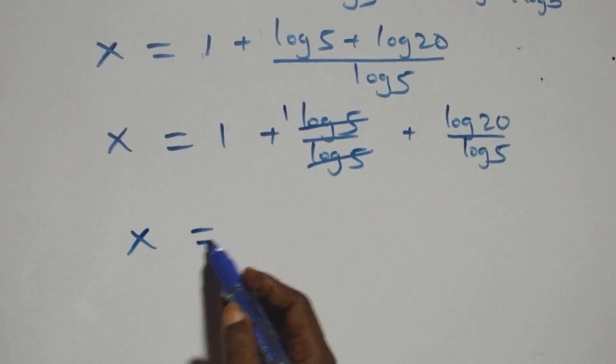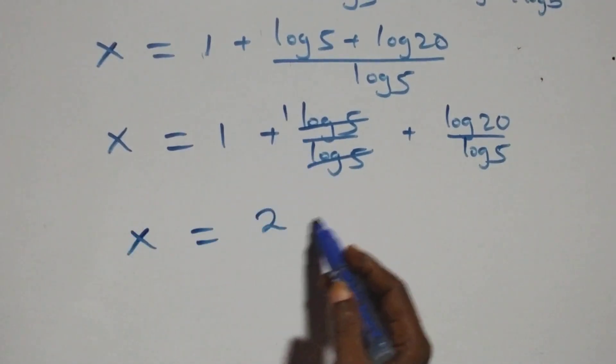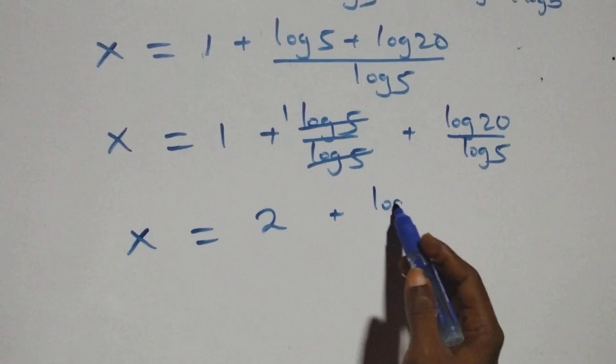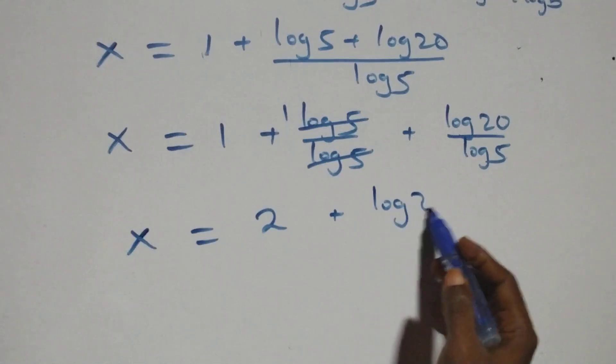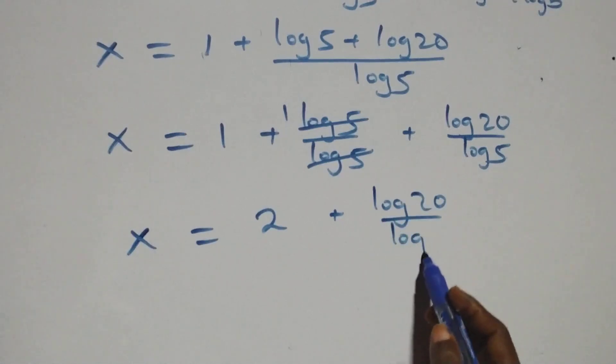Separating the fractions and simplifying log 5 over log 5 to 1 again, this becomes x equals to 1 plus 1, which is 2, then plus log 20 over log 5.